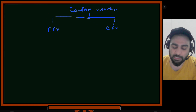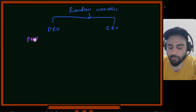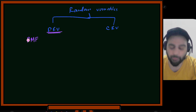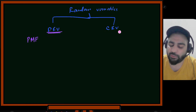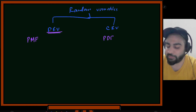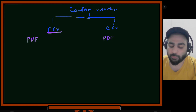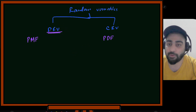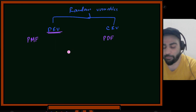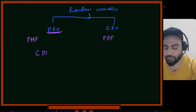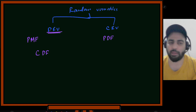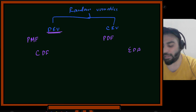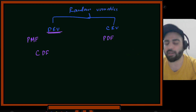We discussed the probability mass function, which is defined for discrete random variables. For continuous random variables, we define the probability density function (PDF). Common to both is the cumulative distribution function (CDF). I gave brief definitions during EDA, but now we are tackling them in detail.